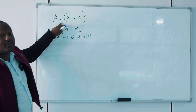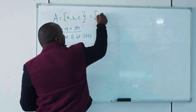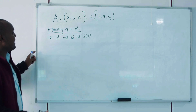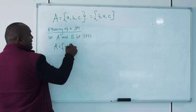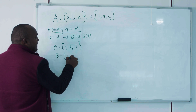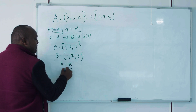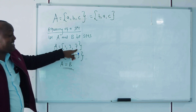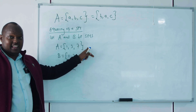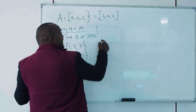We say set A and set B are equal if all elements of A are in B and all elements of B are in A — in simple terms, they share the same elements. Another important point: in a set, the order doesn't matter. For example, set A = {1, 3, 7} and set B = {1, 7, 3} — set A equals set B because all elements in A are in B and vice versa.